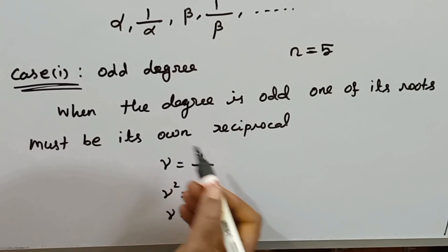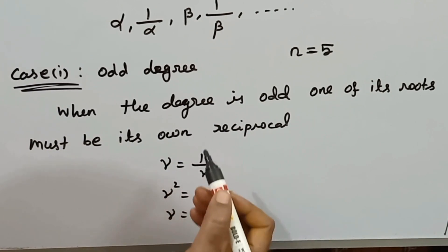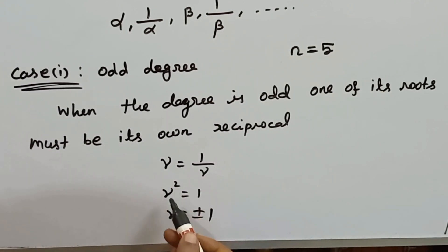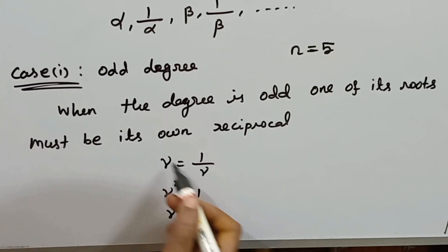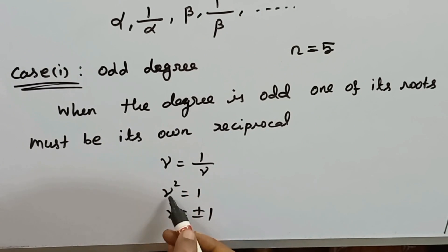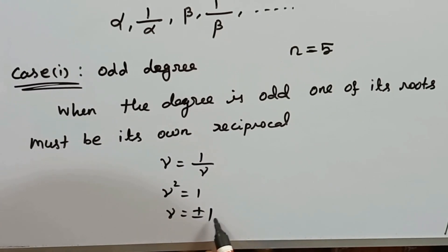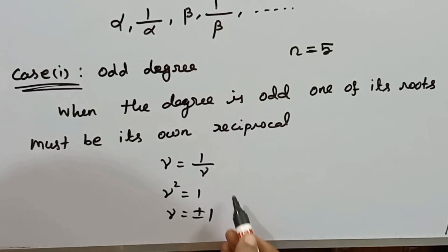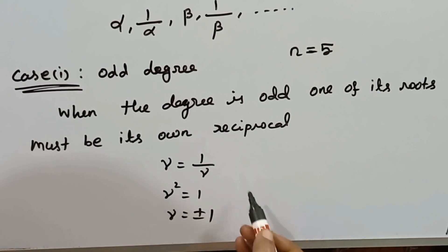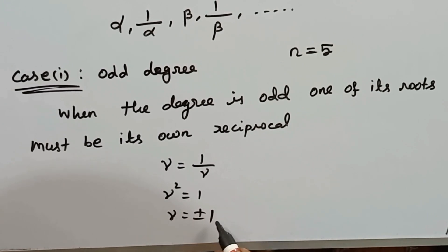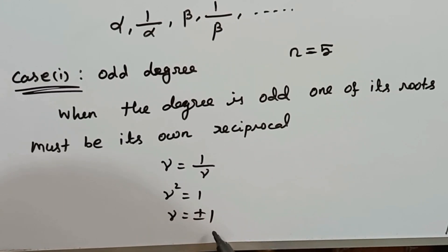That is gamma equal to 1 by gamma. If gamma equals 1 by gamma, then gamma squared equals 1, so gamma equals plus or minus 1. For an odd degree reciprocal equation with like signs, plus 1 is a root; for unlike signs, minus 1 is a root. So we have two types.